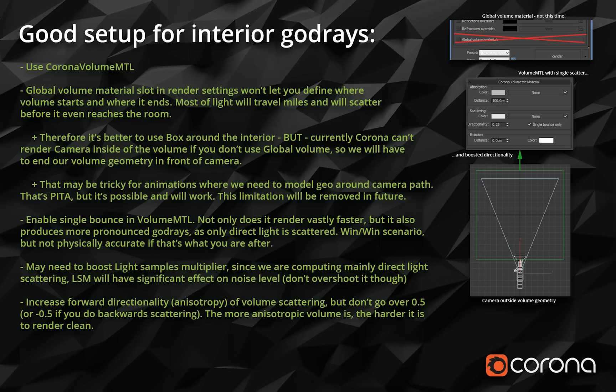The next thing I want to talk about is good setup for interior god rays. For the volumetric material we'll be using Corona volume material. There's a global volume material slot, but it's a bit problematic because you don't clearly define where the fog ends, and usually you have a small room inside a huge volume. Most sunlight will scatter a lot before it reaches the window and eventually the room. So for interiors, if you want really nice sharp crisp god rays, I would not use global volume material.